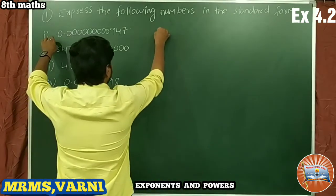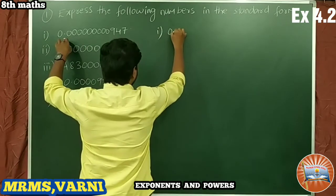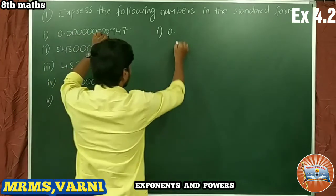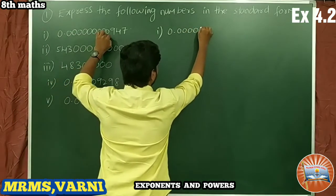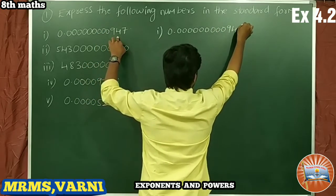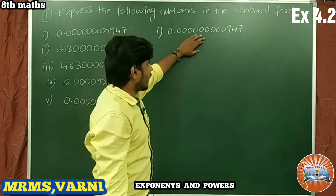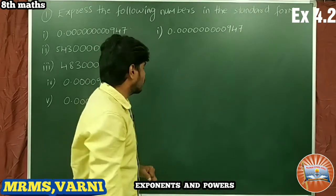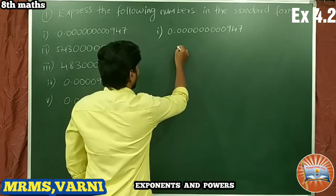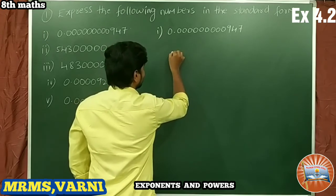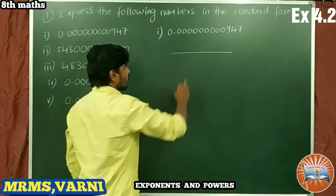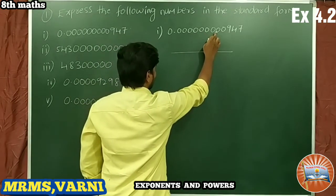The first given number is 0.0000000009 47. We have to write it in standard form. How many digits are there after the decimal point? Let's count: 1, 2, 3, 4, 5, 6, 7, 8, 9...